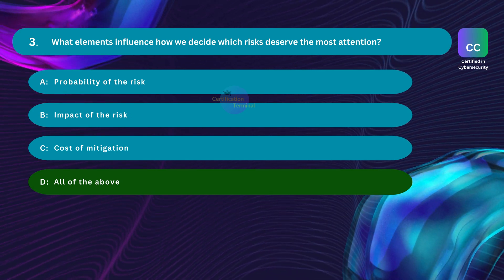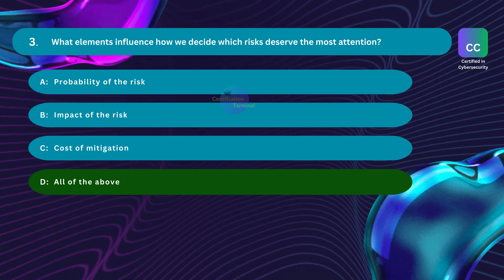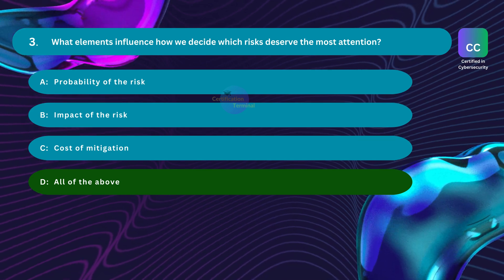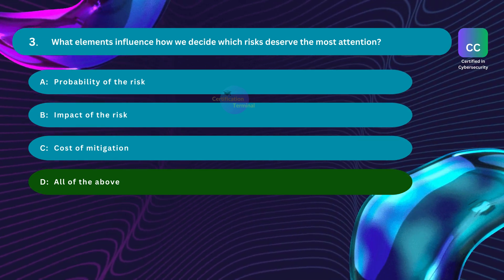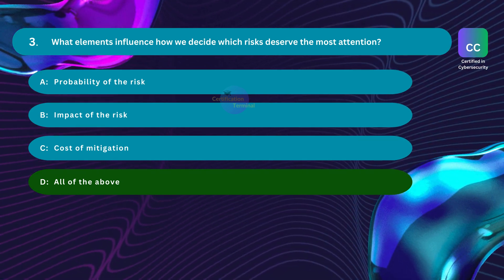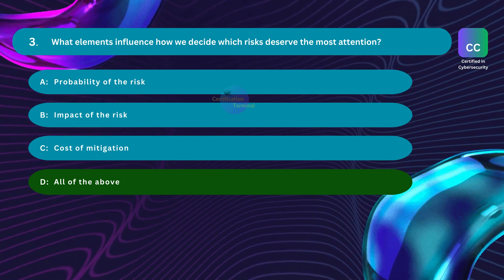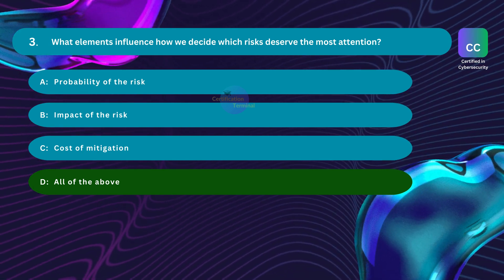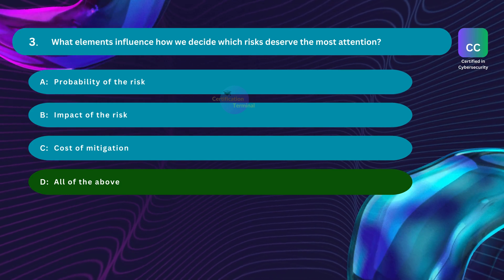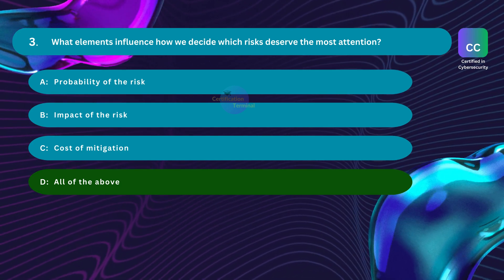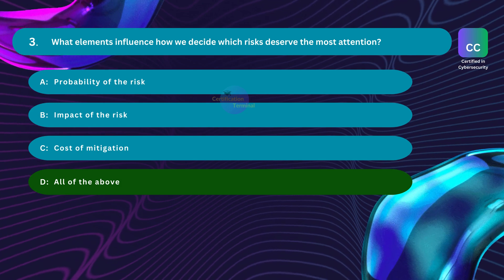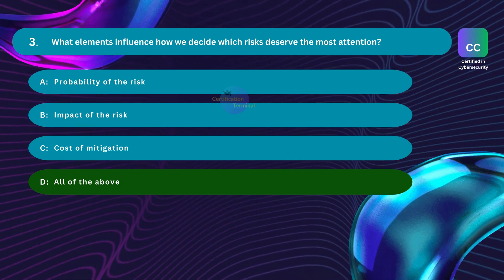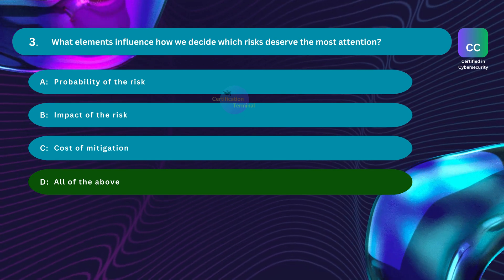Probability of the risk relates to the likelihood or chance that the risk will occur. Risks with a high probability of occurrence may require more attention because they are more likely to materialize and cause harm. Conversely, risks with a low probability may still be important but may not warrant immediate action compared to higher-probability risks.